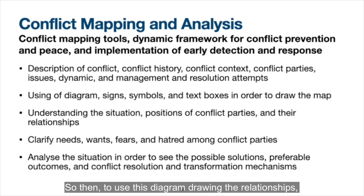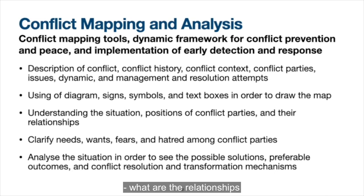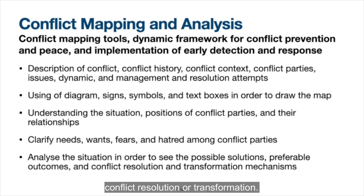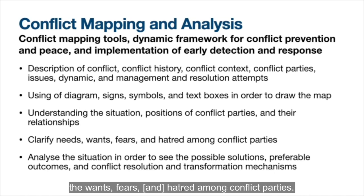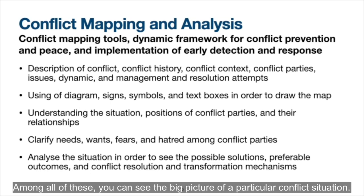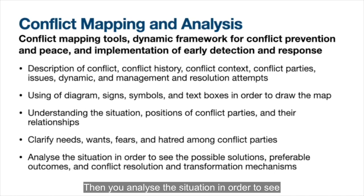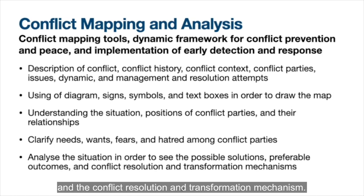Using this diagram to draw relationships is called conflict mapping. You can see the relationships of people and what could contribute to conflict resolution or transformation. Drawing the map and making the conflict analysis helps you understand the situation, the positions of the conflicting parties, and their relationships. Furthermore, you can clarify the needs, wants, fears, and hatred among the conflicting parties. Among all of these, you can see the big picture of a particular conflict situation, then analyze the situation to see possible solutions, preferable outcomes, and conflict resolution and transformation mechanisms.